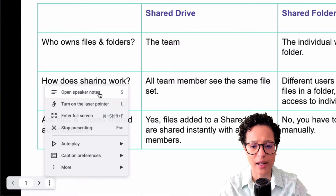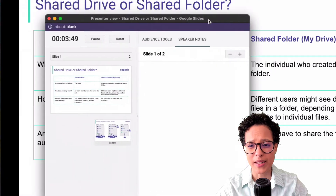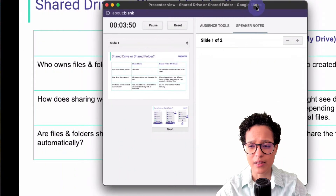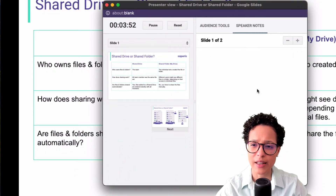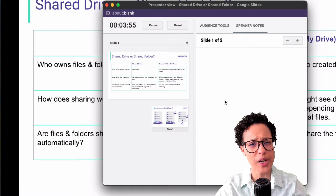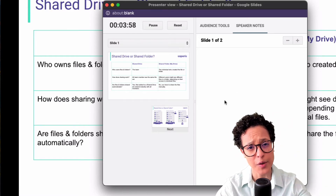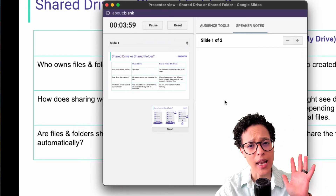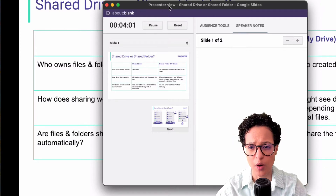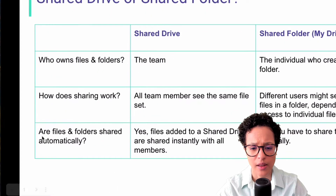Then the three dots standing for more options — I can display my speaker notes. Clicking on it, it activates off screen, so I'm just dragging it in here. This is the presenter view. By the way, if you want a detailed video on how to use presenter view, let me know in the comment section below.